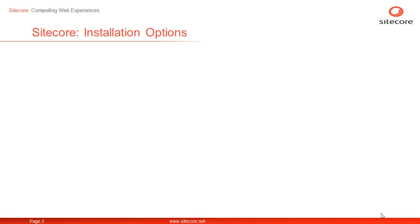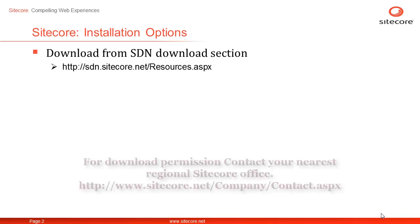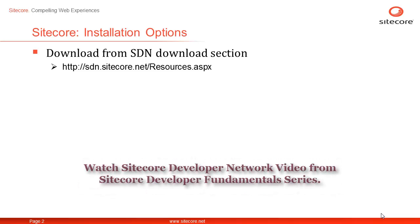Sitecore provides you with two distinct ways of installing. The product installer is available for download on SDN in the download section at http://sdn.sitecore.net/resources.aspx for various Sitecore releases. If you don't see the download tab or are unable to download, please contact your nearest Sitecore office for download permission. Please watch the video titled Sitecore Developer Network from the Sitecore Developer Fundamentals series to know more about SDN.